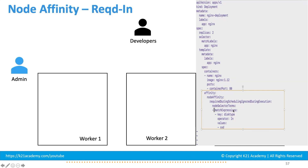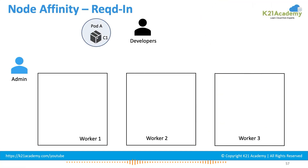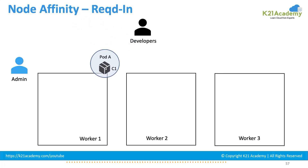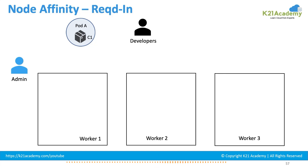The condition is specified as node selector terms. You specify an expression giving the key, the value, and the operator — in this case 'in'. Whichever node is labeled as disk type SSD, you require your pod to be placed in such labeled nodes. The pod request goes to the scheduler, which sees that disk type SSD is a mandate condition. Because none of the nodes in the cluster are labeled as disk type SSD, the pod goes into pending state and shows that there are no matching resources to place it.